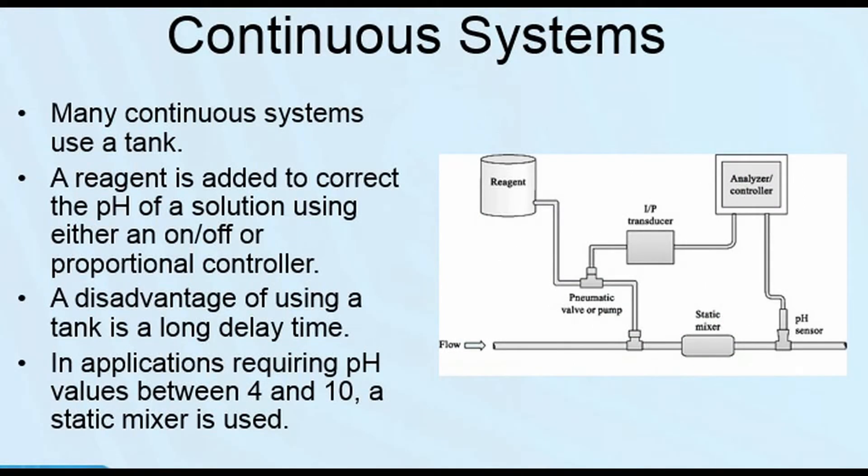Here is an attempt at a continuous process to correct the pH. Here what they're saying is that you can mix the reagents. But even so, notice that there is a static mixer, and this just shows you that it's almost impossible to have a continuous project. You must have a little place to do some sort of mixing.